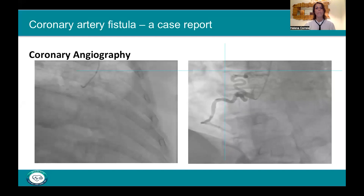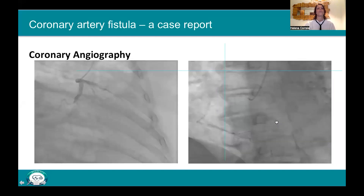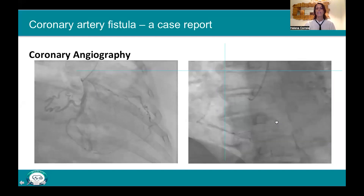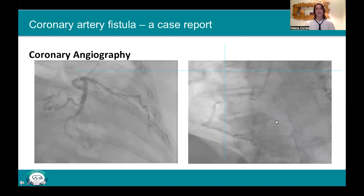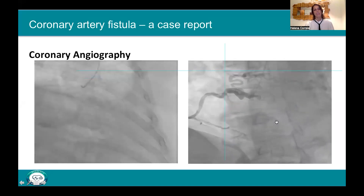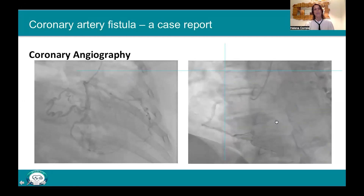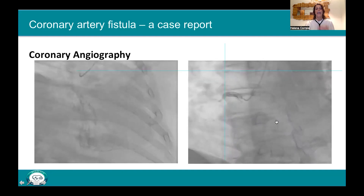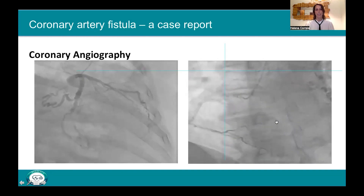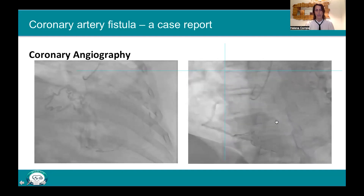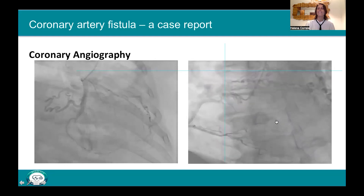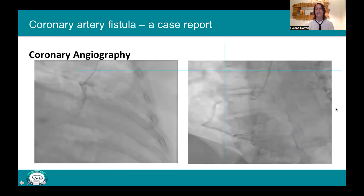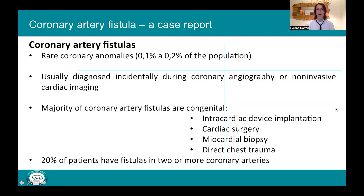Let's look at the coronary angiography. You can see that we have two fistulas: one coming out from the proximal segment of the circumflex, and the other with the origin at the proximal segment of the right coronary artery. But before we go through what we did for this patient, let's talk a little bit about coronary artery fistulas.